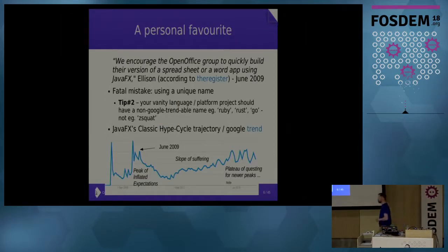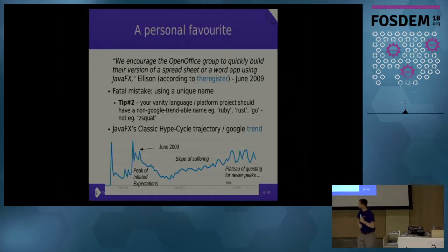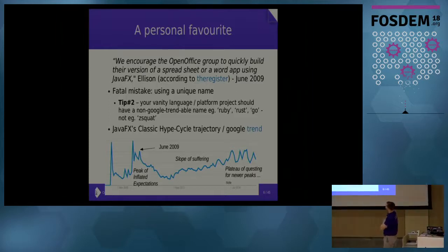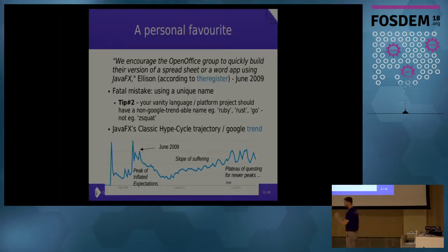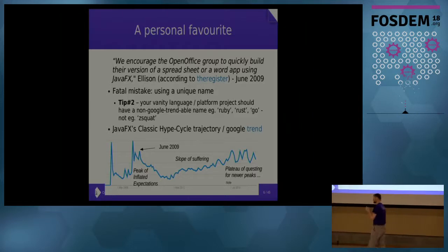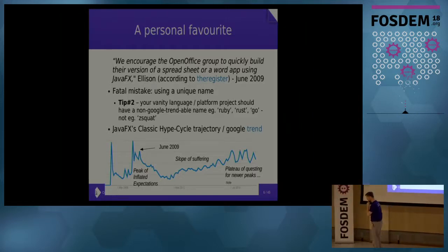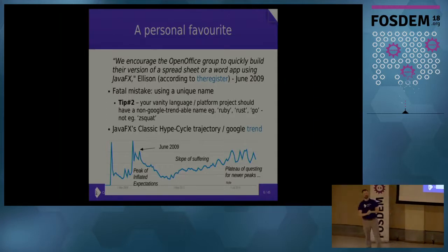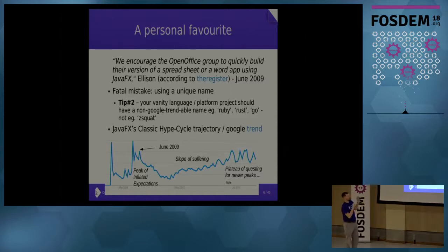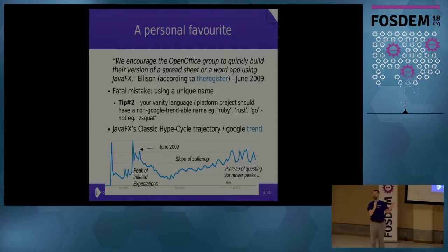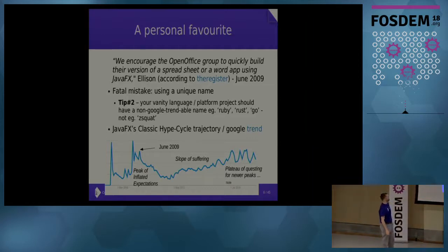My personal favorite is another great Larry Ellison quote: 'quickly build their version of a spreadsheet WordPress using JavaFX.' Now, Larry made a fatal mistake — someone in Java made a big mistake here — which was to use a name that can actually be Googled. You can actually see the trend. Most people, when they create a new language — apart from Haskell — use a name that you can hide very easily: Ruby, Rust, Go being a particularly awesome example. The Google trend for Go is just completely flat over all time.